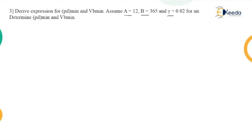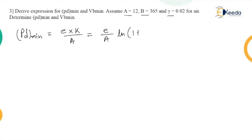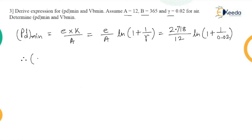Let us use the third numerical to find pd minimum and VB minimum. The equation is: (pd)_min = e × K / a, where K = ln(1 + 1/γ), e = 2.718, and γ = 0.02. Solving using a calculator gives (pd)_min = 0.818.